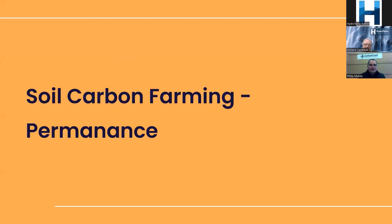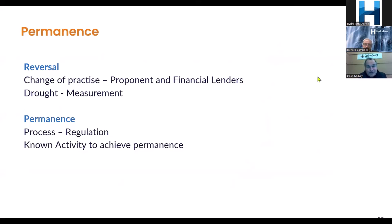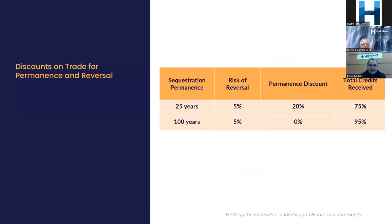Permanence is addressed mostly at the government level — looking at reversal risk like drought and change of practice occurring on the farm, with permanence addressed via regulation and activities that achieve permanence. What the government actually does is apply a discount to the carbon you achieve: 5% for risk of reversal, and a permanency discount of 20%. If you can demonstrate at the end of your 25 years that permanence has been achieved to a certain degree, you'll be able to claim a portion of that.